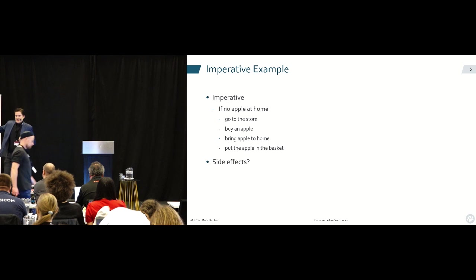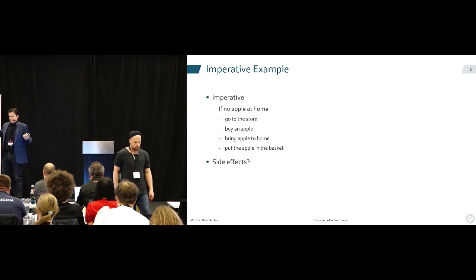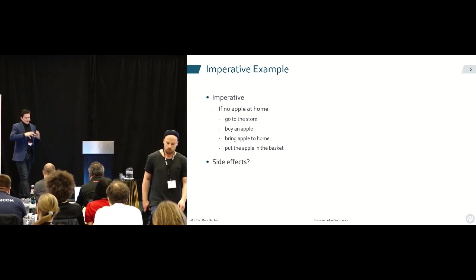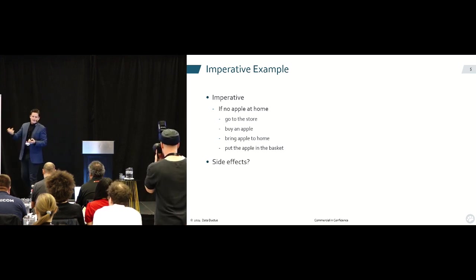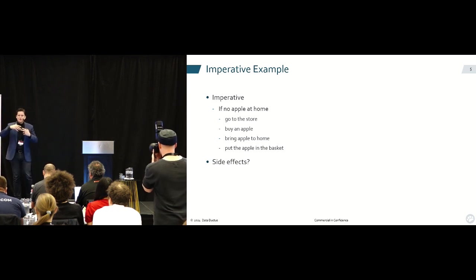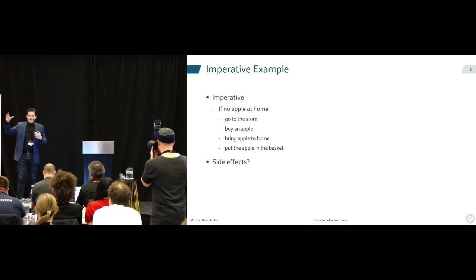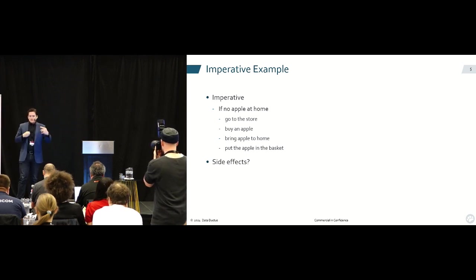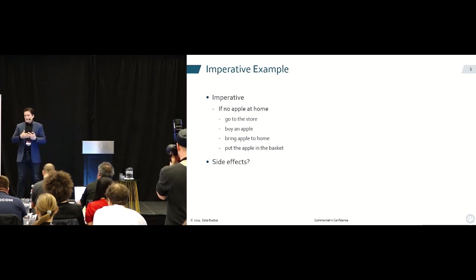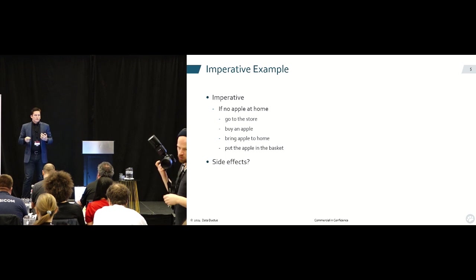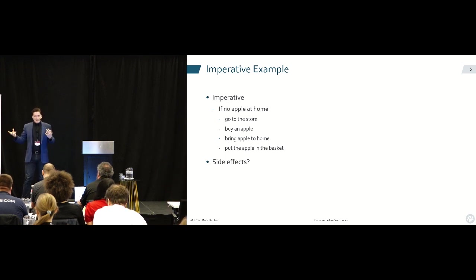Let's take a look at an imperative example. Let's say you want to have an apple in your house, in your fruit basket. If there isn't an apple in the fruit basket — no apple at home — go to the store, buy an apple, bring the apple home, and then put the apple into the basket. Side effects: has anything happened other than the fact that you went and got an apple? If you drive to the store, you're going to use a little bit of gas and some time.